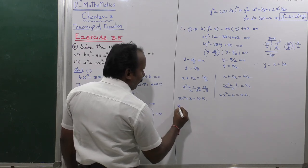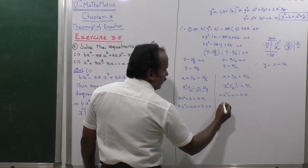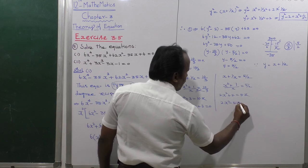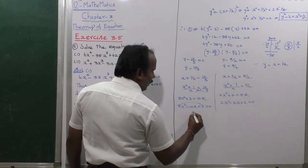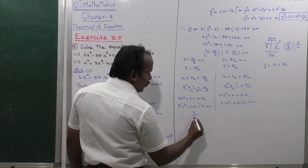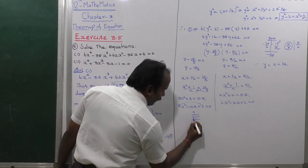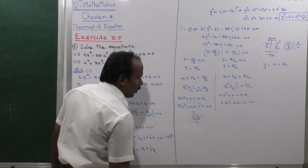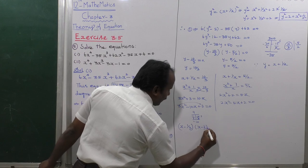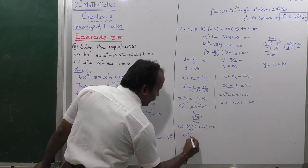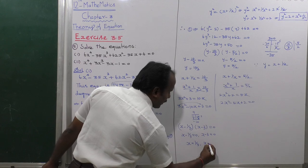From the first: 3x² minus 10x plus 3 equals 0. Multiplication: 3 × 3 = 9; factors adding to −10 are −1 and −9. Dividing by 3: (x minus 1/3)(x minus 3) = 0. So x = 1/3 and x = 3. From the second: 2x² minus 5x plus 2 equals 0. Factors: 2 × 2 = 4; adding to −5 are −1 and −4. Dividing by 2: (x minus 1/2)(x minus 2) = 0. So x = 1/2 and x = 2.